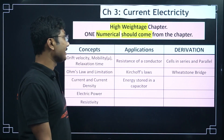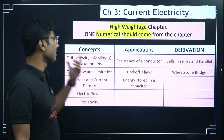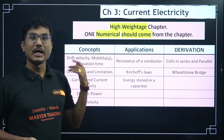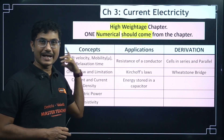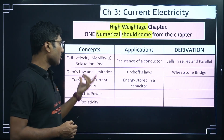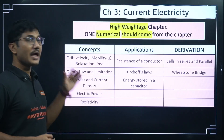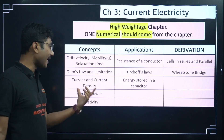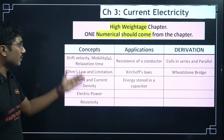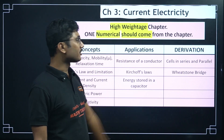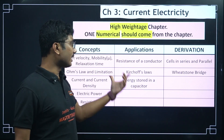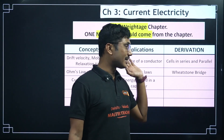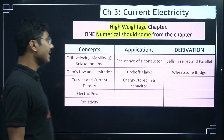Current Electricity is one of the highest-weighted chapters. One numerical will come from this chapter, so definitely practice numericals here. Important concepts: drift velocity, mobility, relaxation time, their expressions and units, Ohm's law and its limitations, current and current density, electric power, and resistivity. Application topics include: resistance of a conductor, Kirchhoff's laws, energy stored in a capacitor, and cells in series and parallel. The most important derivations are the Wheatstone bridge and cells in series and parallel.